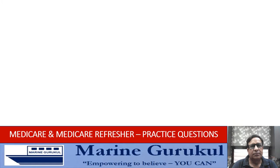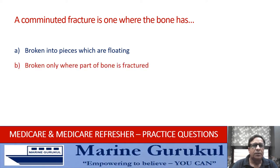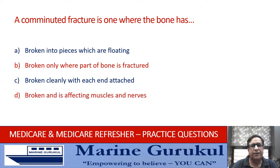A comminuted fracture is one where: the bone has broken into pieces which are floating; broken only where one part of the bone is fractured; broken mainly with each part still attached; or broken and affecting muscles and nerves. A comminuted fracture is wherein the bone is broken into pieces which are floating. The answer is A.